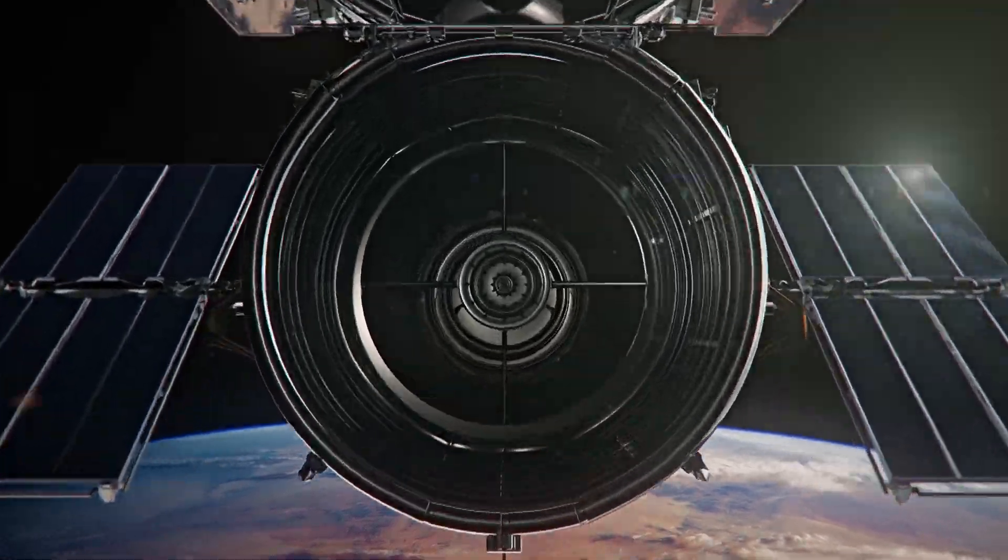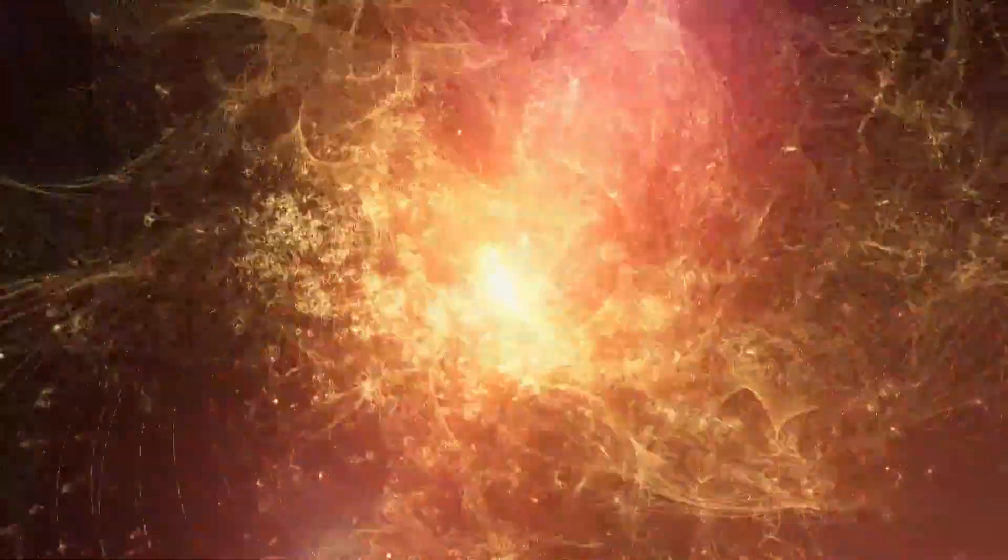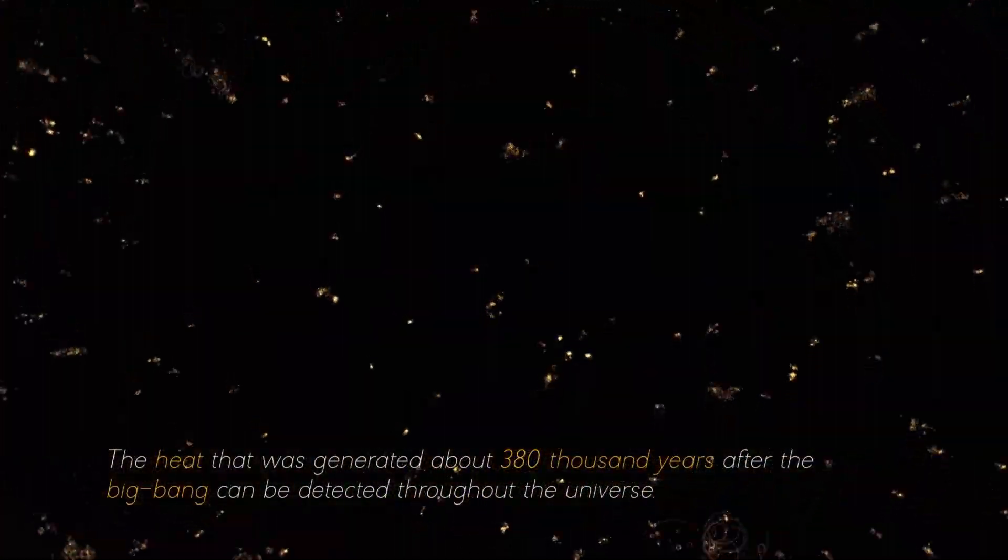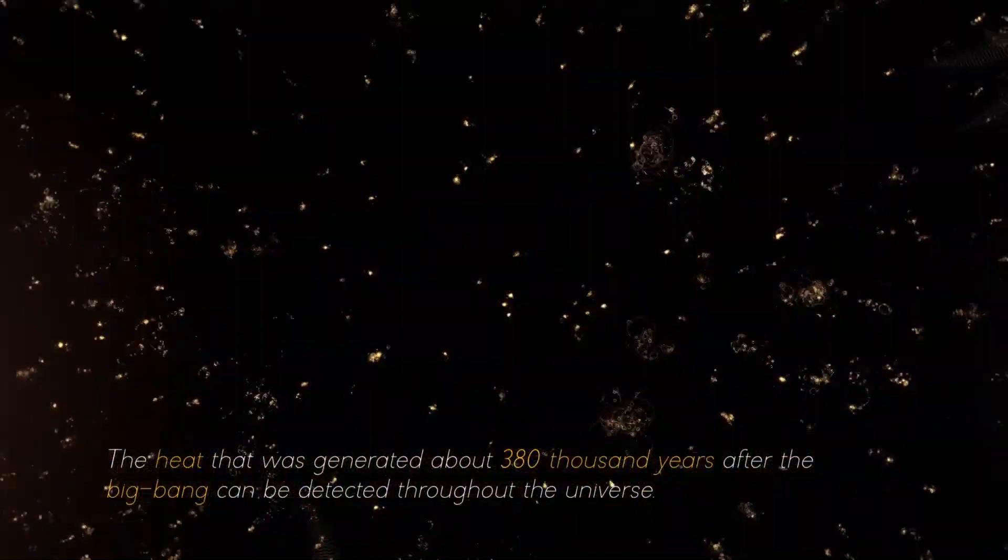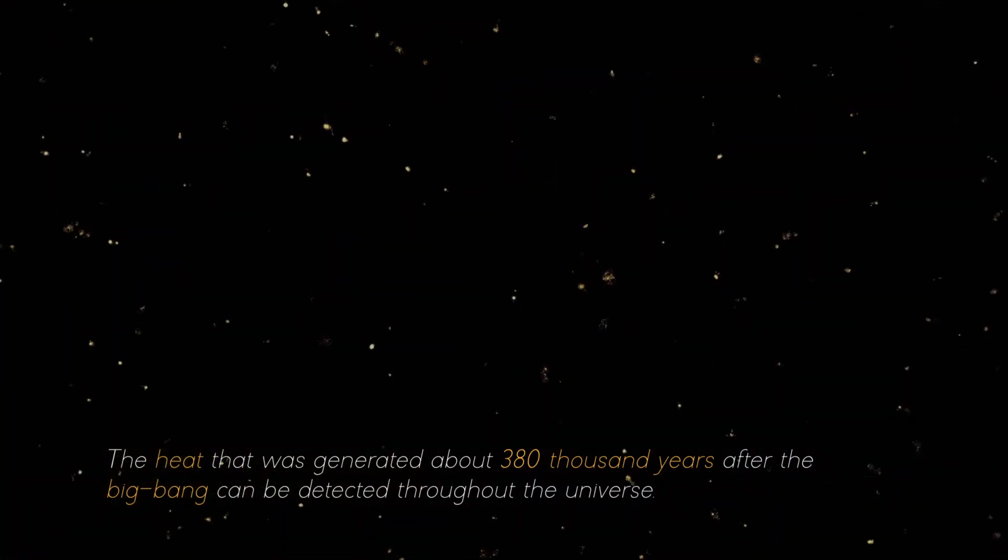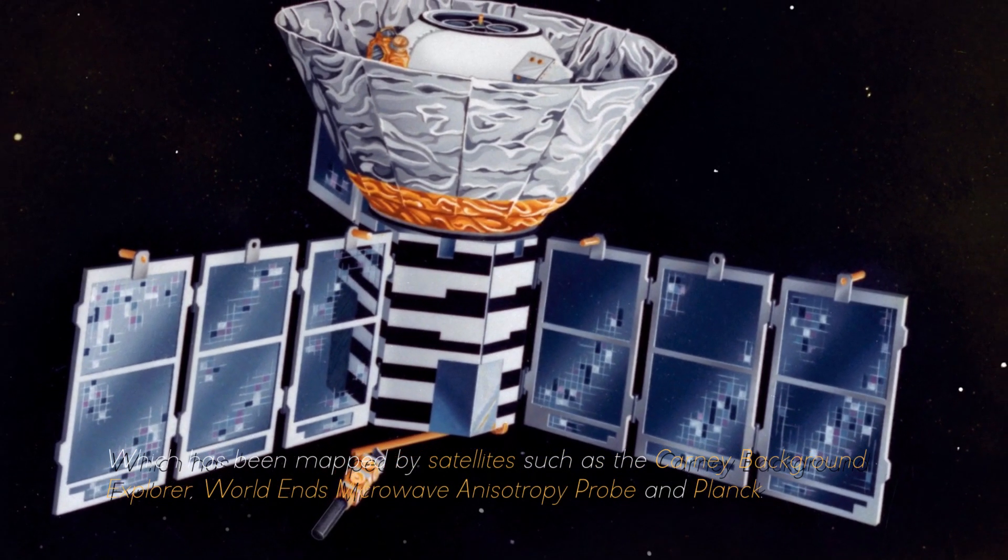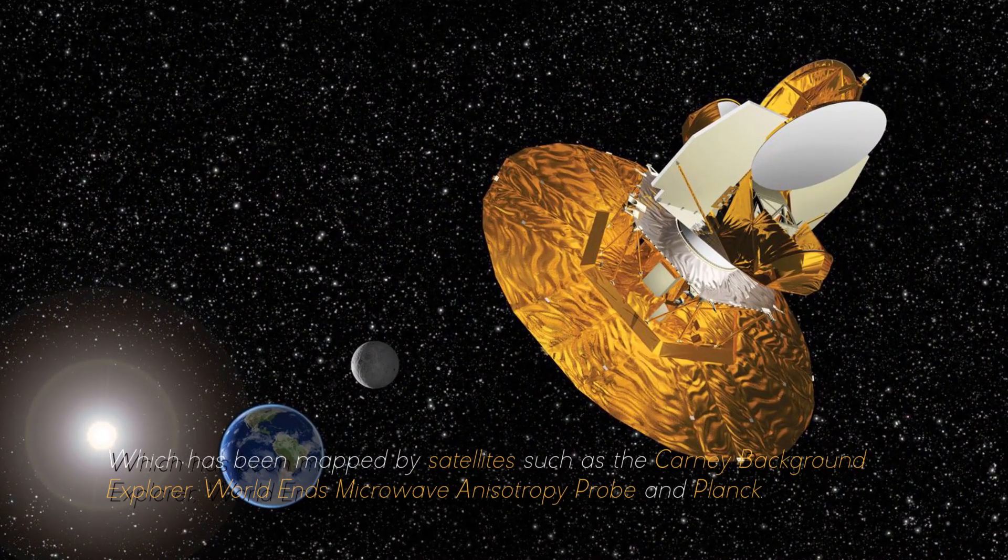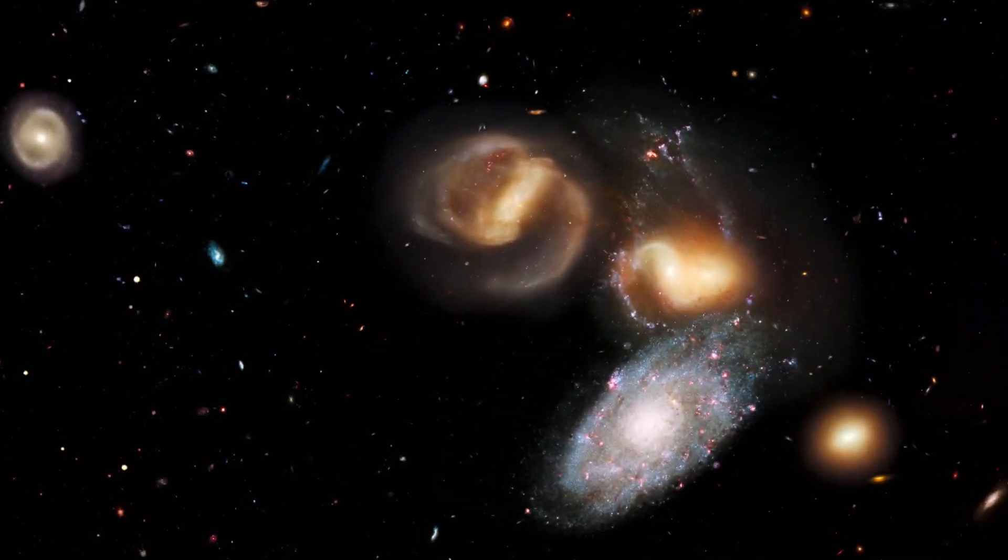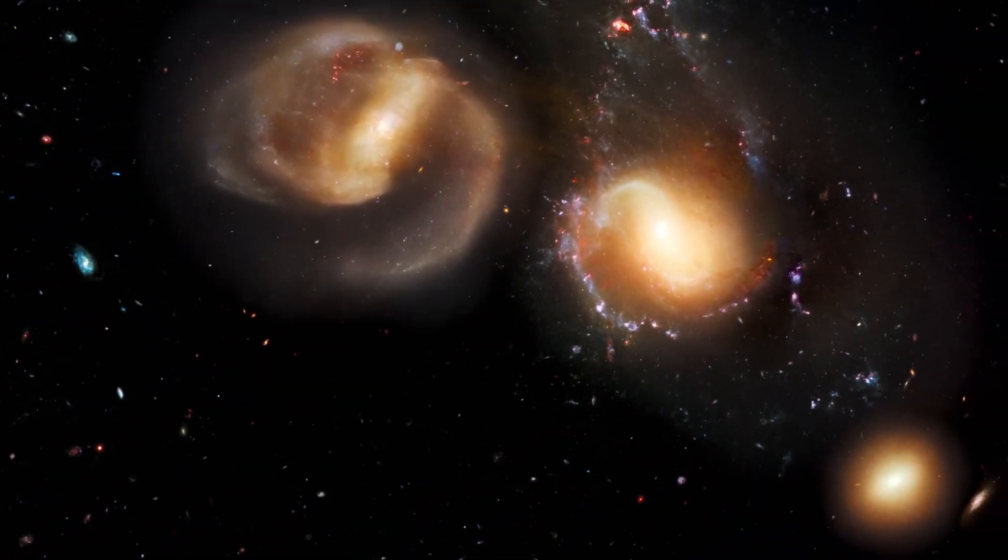Although we cannot directly observe the Big Bang, there is observable evidence for it. For example, the heat that was generated about 380,000 years after the Big Bang can be detected throughout the universe, which has been mapped by satellites such as the Cosmic Background Explorer, WMAP, and Planck. During this period, the universe was very smooth and simple, with small temperature ripples.